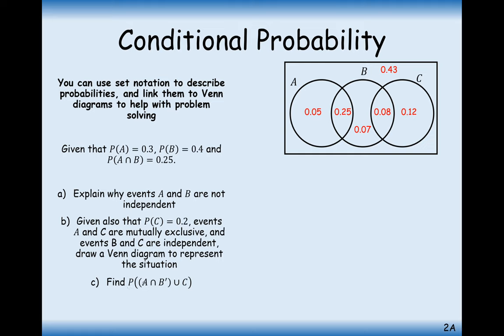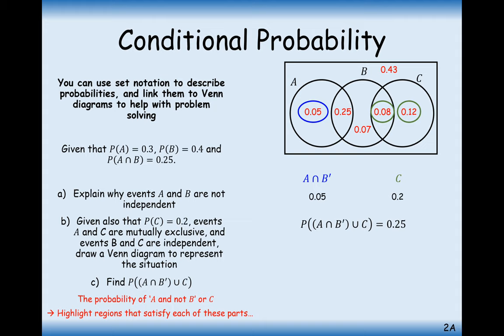Tricky question here. Now find the probability of A and not B, or the probability of C. Let's split it up into its two parts. The probability of A and not being in B—look at A and we don't want it to be in B, so it's just the 0.05 probability. The probability for C is any probability in the circle of C, so that's both 0.08 and 0.12, which is 0.2. It's the union of both probabilities, so we add them together and get 0.25.